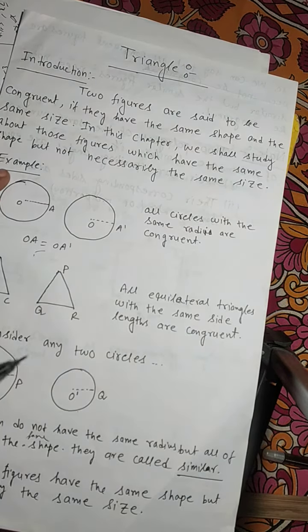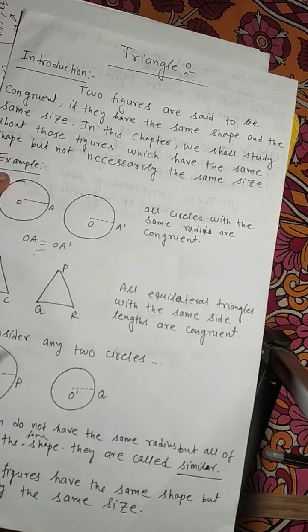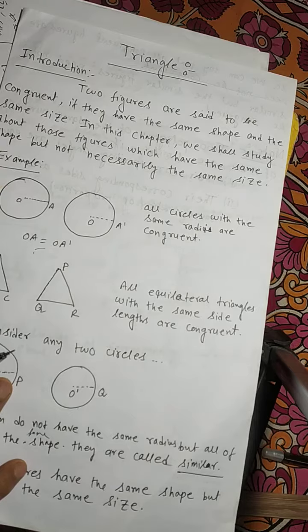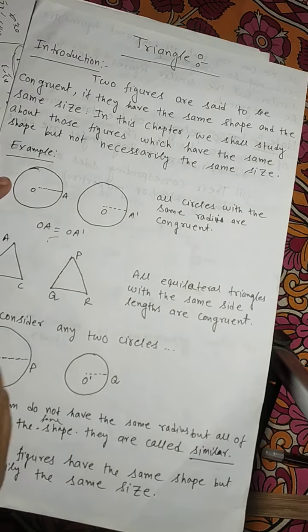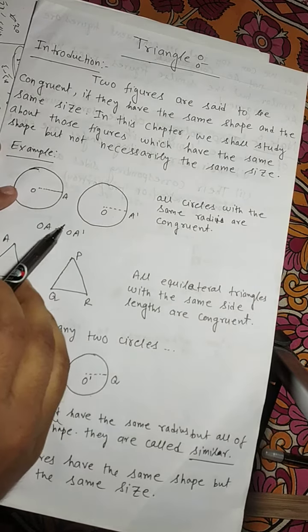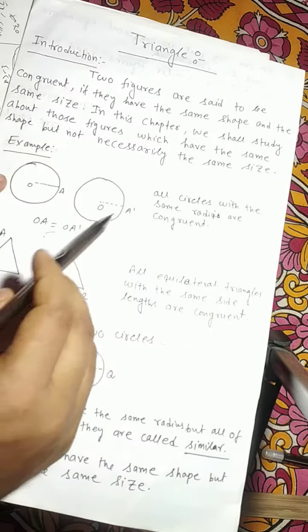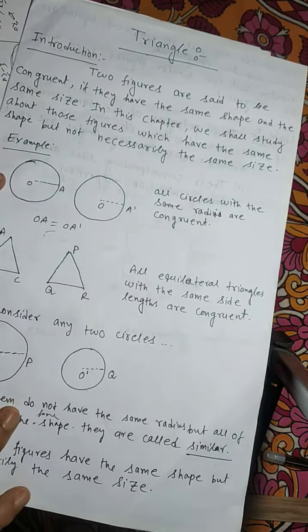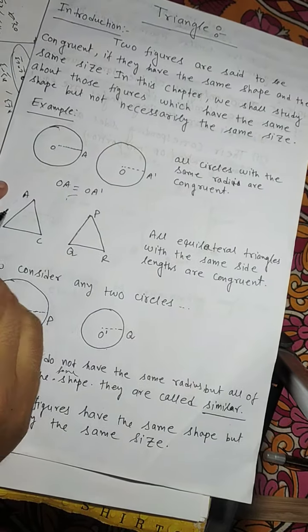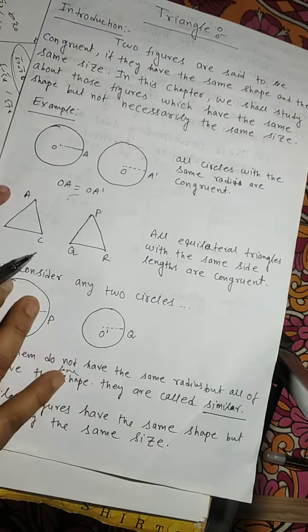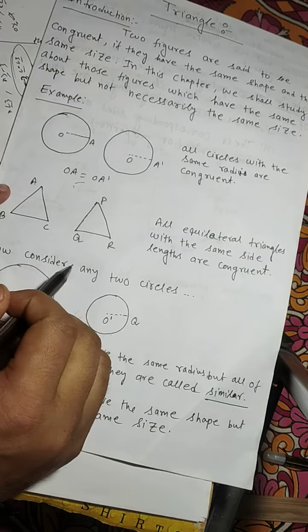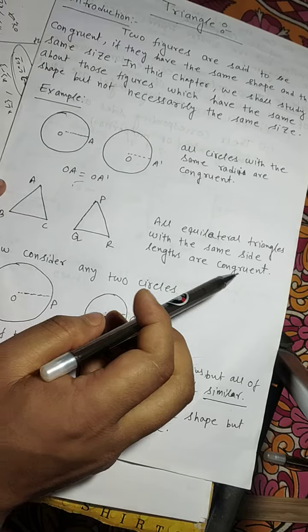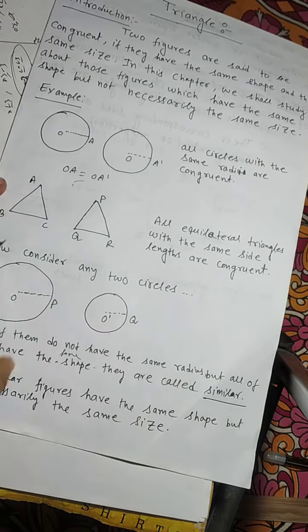In this chapter we will study figures which have the same shape but not necessarily the same size. Here I am taking two circles whose radii are equal. All circles with the same radii are congruent. Here I am taking two triangles, ABC and PQR. All equilateral triangles with the same side lengths are congruent.